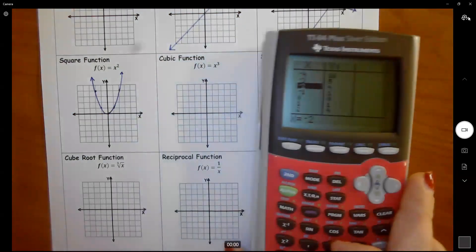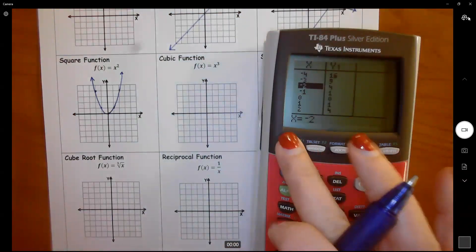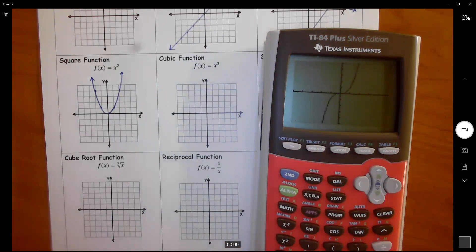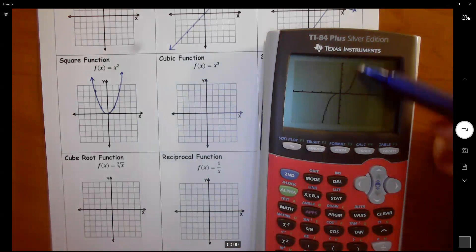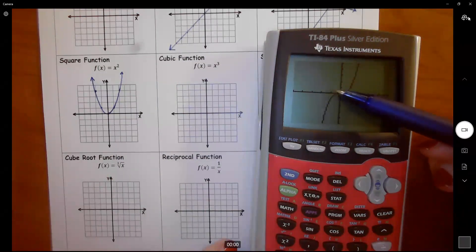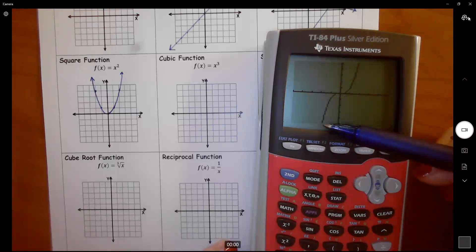So what happens if I change this to an x cubed? Now it looks like this right here, where this portion almost looks the same as my parabola, but now instead of this going up, now it comes down.